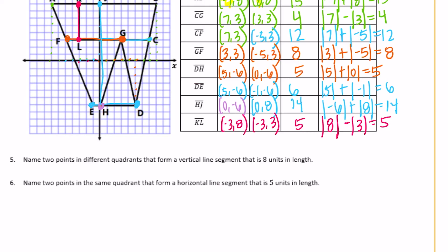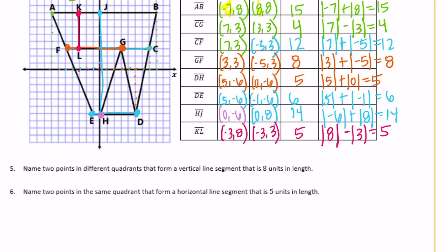Number 5: name two points in different quadrants that form a vertical line segment that is 8 units in length. So the points need to be in different quadrants and form a vertical line. I'll draw a vertical line 8 units long and label it: 2, 4 and 2, negative 4. It's vertical, 8 units in length, and the points are in different quadrants. There are infinite possibilities — that's just what I chose.